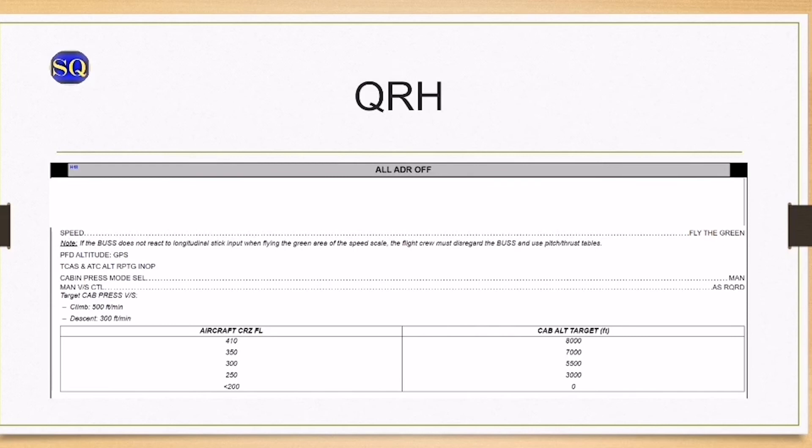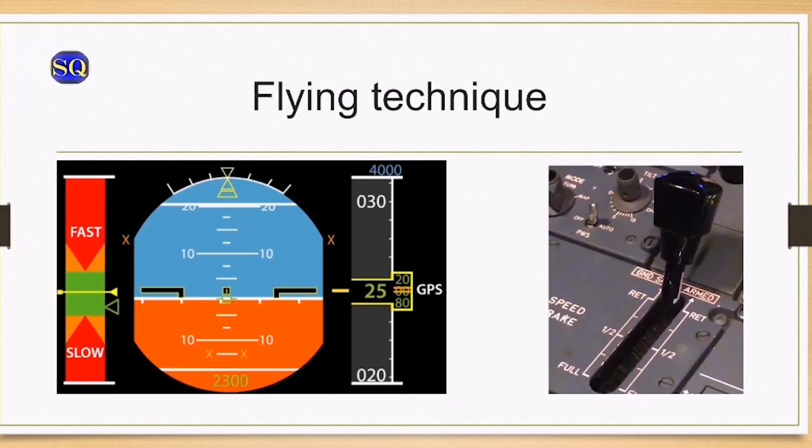Following the ECAM actions, apply the all ADR off QRH procedure. The QRH will provide guidance to manually control the cabin pressure, and you can prepare for the approach and landing.